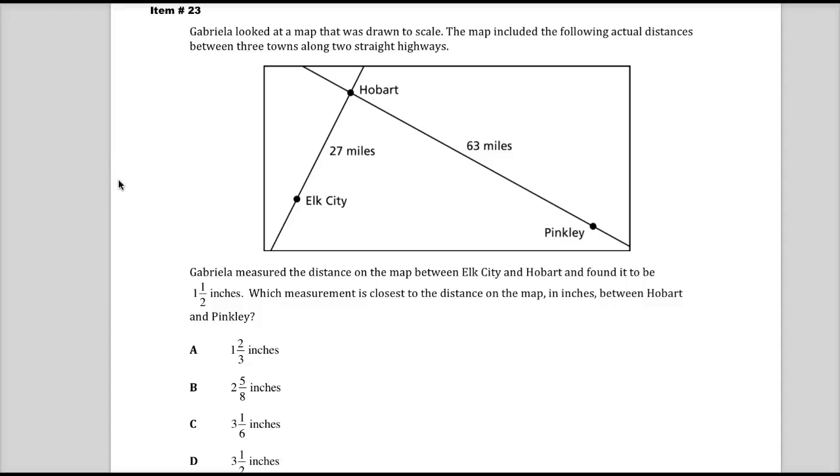Welcome, this is item number 23 from the spring 2014 test release items for Tennessee TCAP 7th grade math. The question says Gabriella looked at a map that was drawn to scale. The map included the following actual distances between three towns along two straight highways. Gabriella measured the distance on the map between Elk City and Hobart and found it to be one and a half inches.